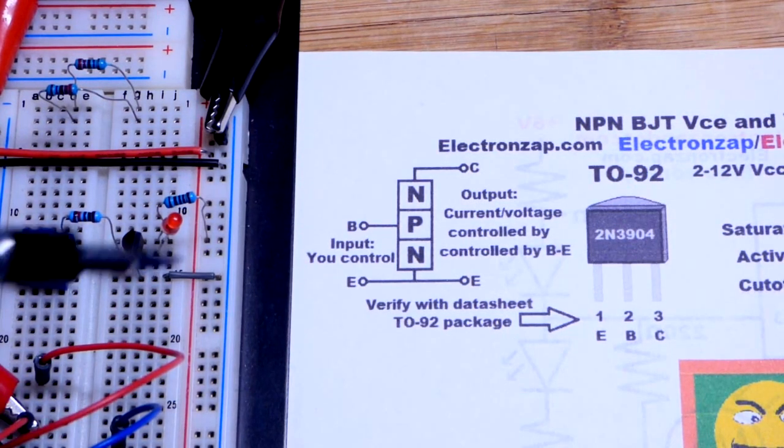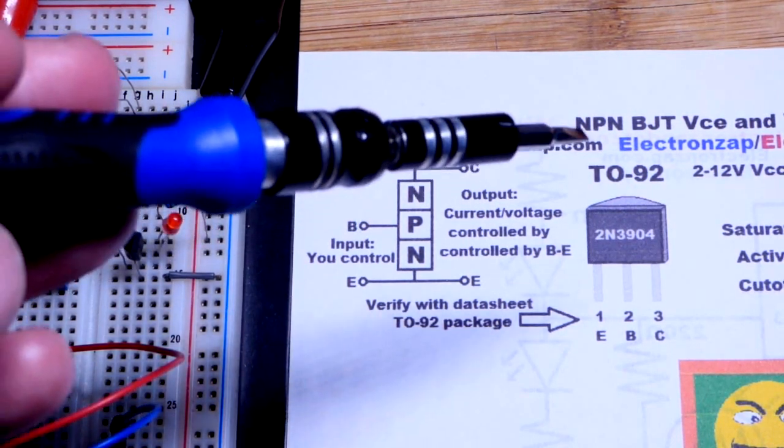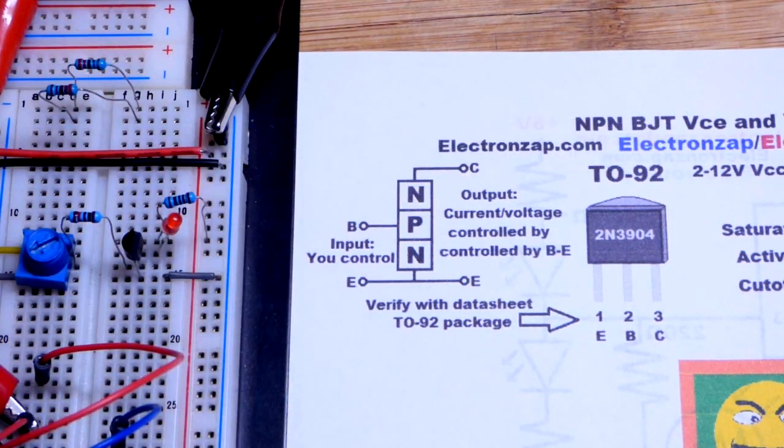So now in this video, we're going to look at voltages again. This time we're going to look at the NPN bipolar junction transistor.